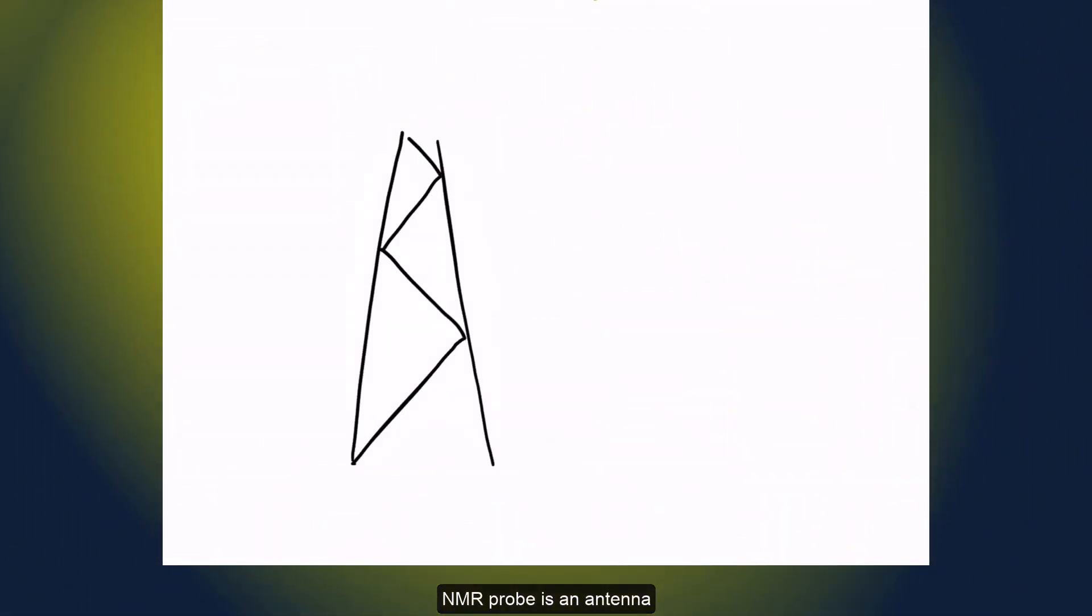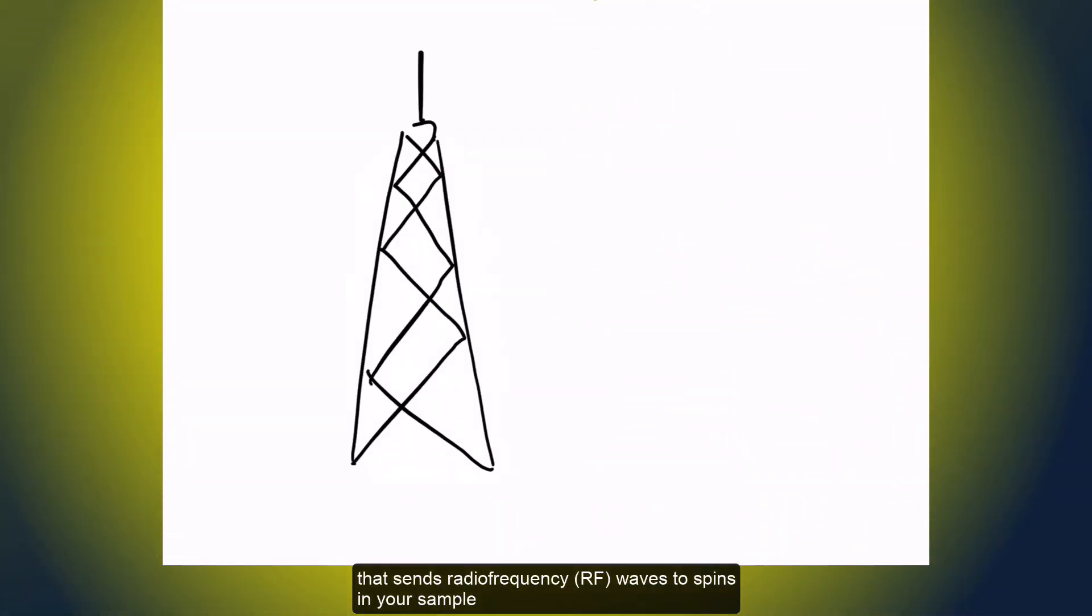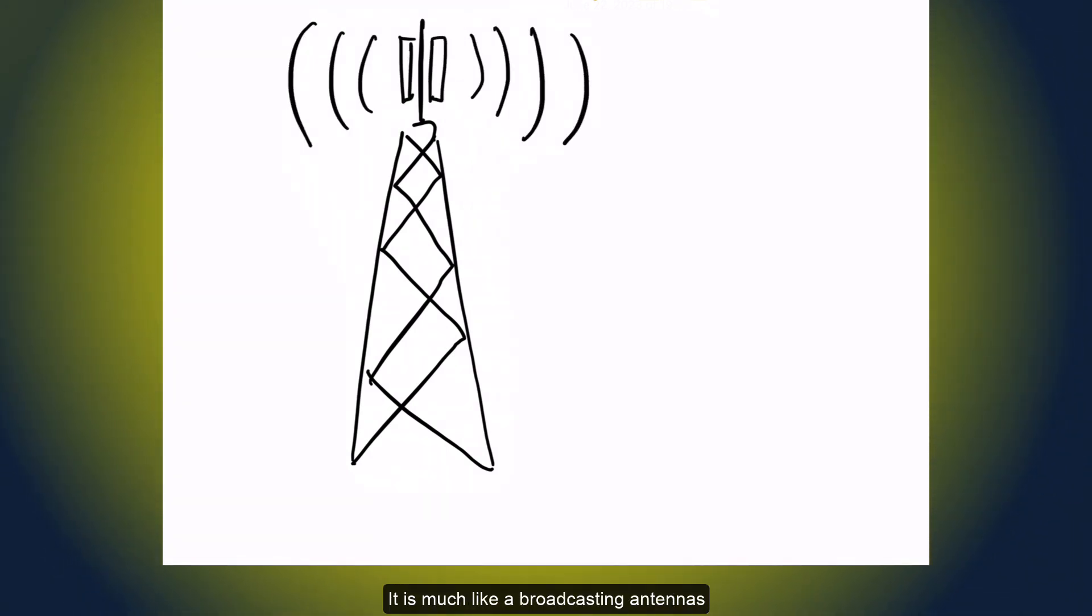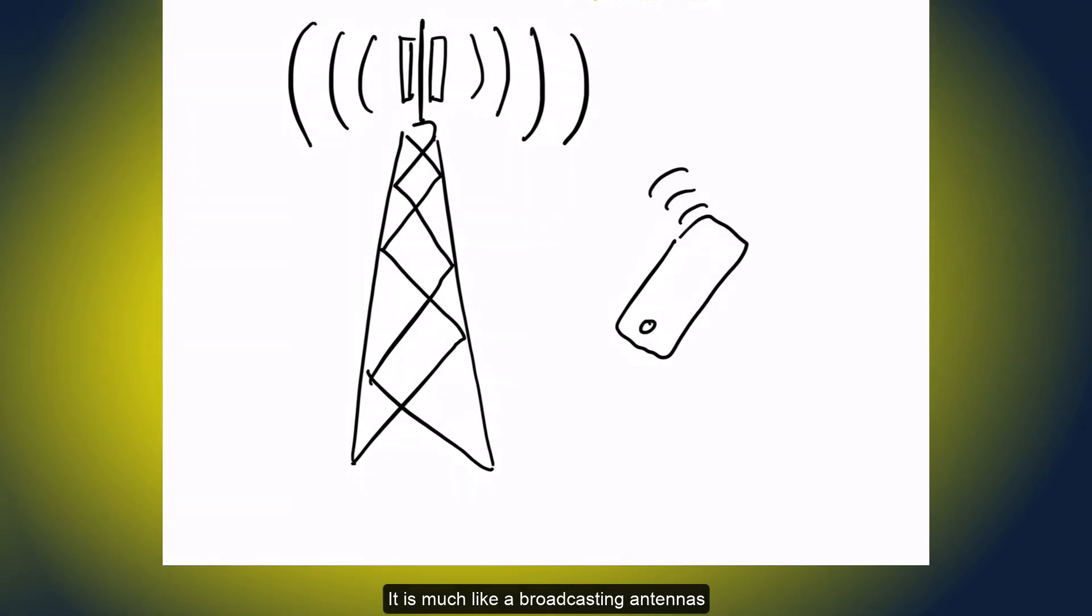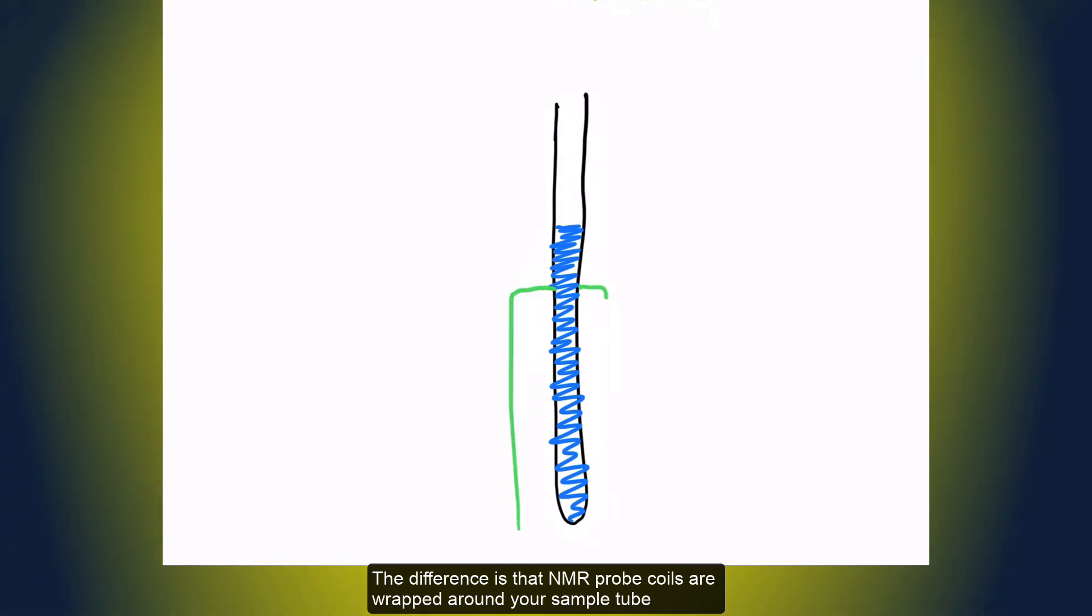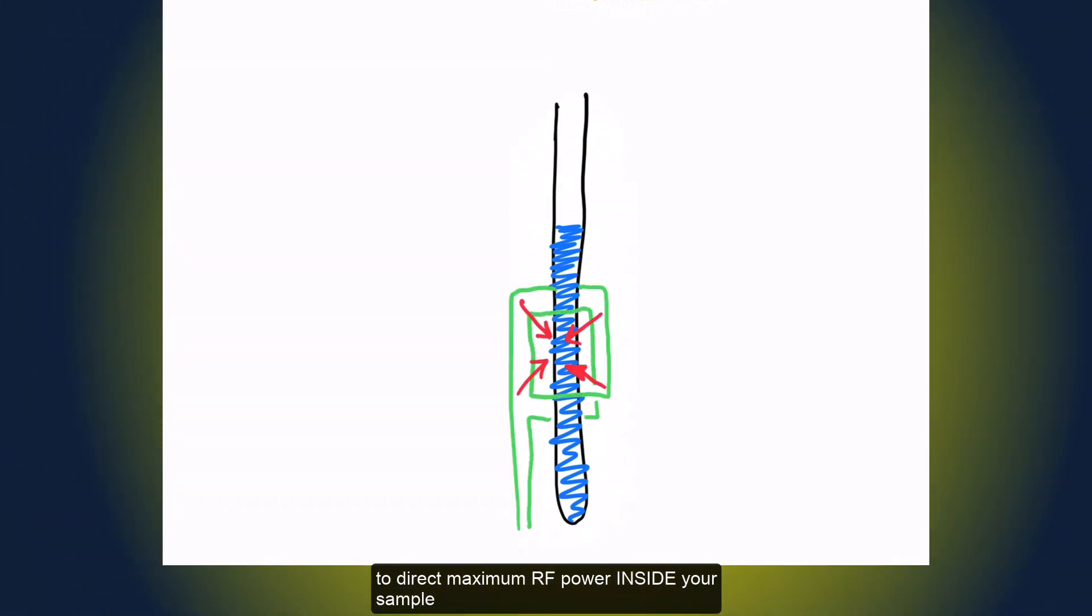NMR probe is an antenna that sends radio frequency waves to spins in your sample. It is much like broadcasting antennas of a cell phone tower communicating with our phones. The difference is that NMR probe coils are wrapped around your sample tube to direct maximum RF power inside your sample.